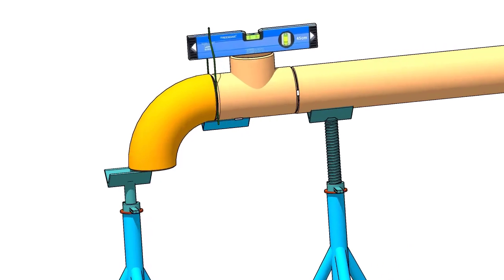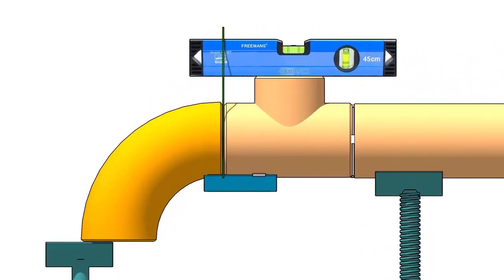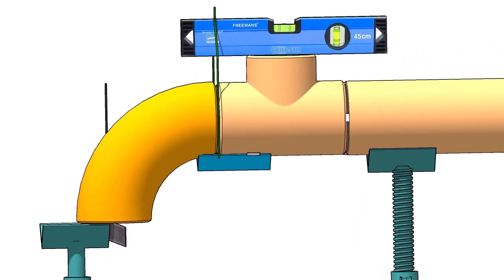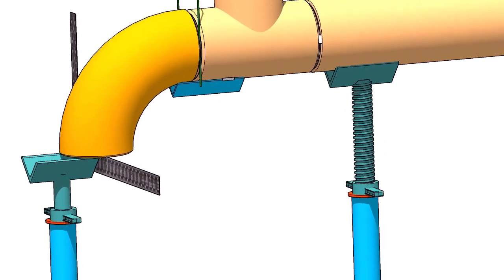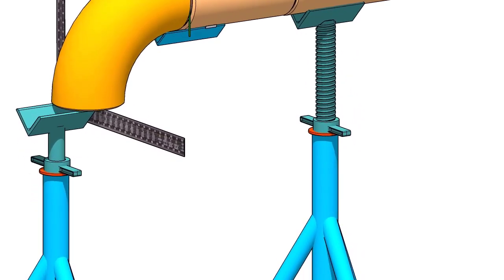Hold a large right angle or straight edge firmly below the elbow face. Put a spirit level on the right angle as shown. Rotate the elbow to make the face level.